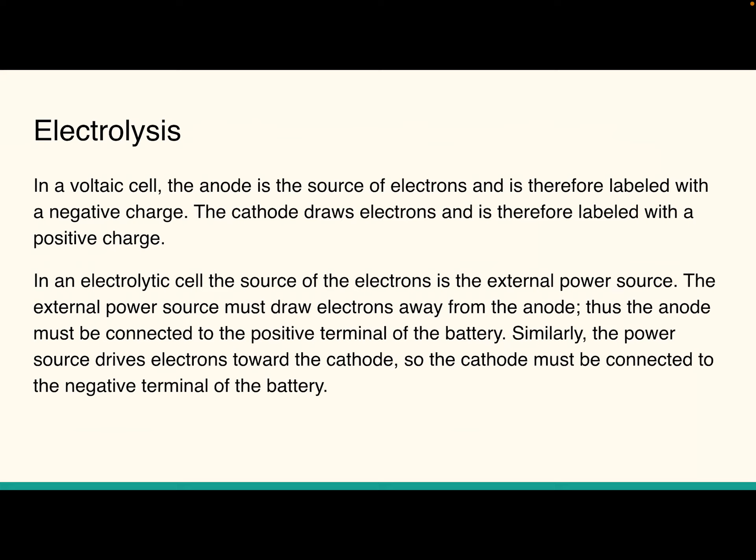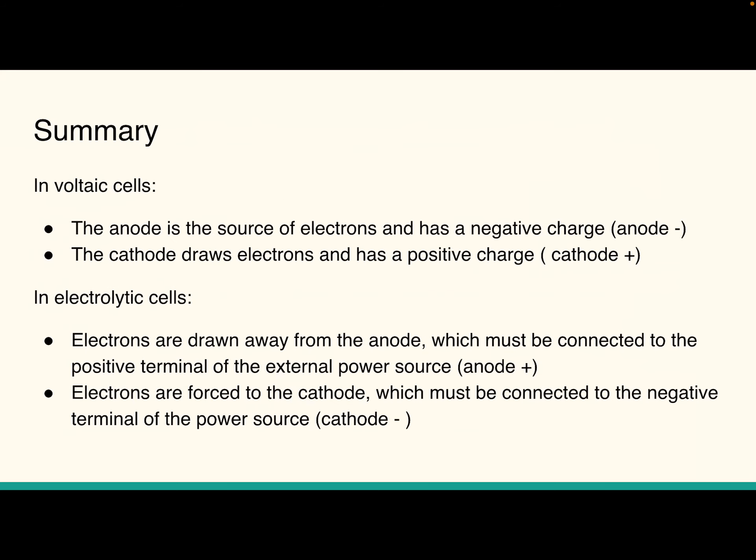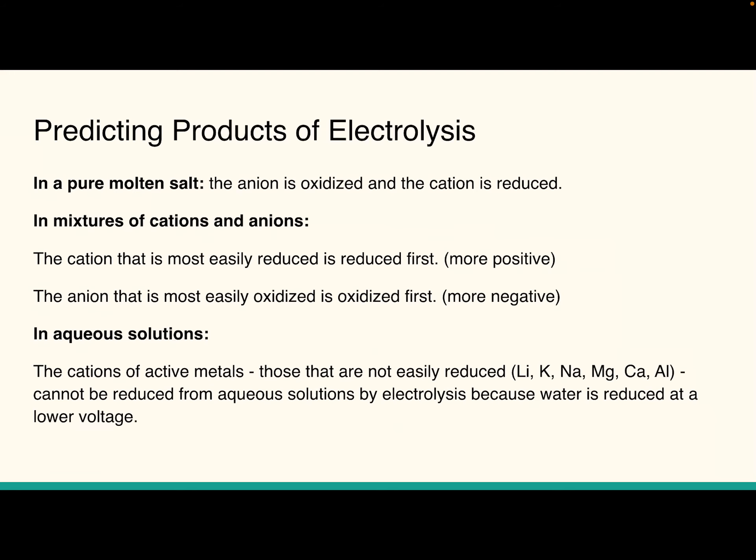The power source drives electrons toward the cathode, so the anode has to be connected to the positive terminal of the battery. The battery is what's forcing this in the other direction. The cathode must be connected to the negative terminal of the battery. So in order for this to work, the battery that you're using has to have more potential, more power than the original cell. If you don't have a strong enough battery, it's not going to push the reaction in the opposite direction.